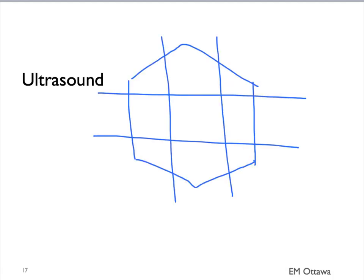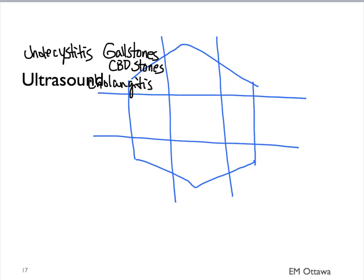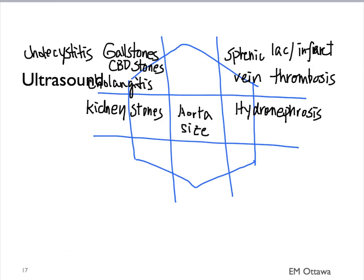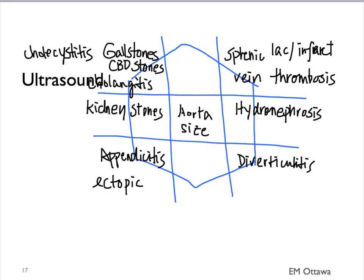When the patient goes for a formal ultrasound, more information can be gained. Formal ultrasound can diagnose gallstones, CBD stones, cholecystitis, and cholangitis. In the left upper quadrant, it can identify splenic laceration, infarct, or thrombosis of the splenic vein. For flank pain, ultrasound can diagnose hydronephrosis and kidney stones, and can also measure the size of the abdominal aorta. We use ultrasound to diagnose appendicitis, and in some patients diverticulitis can be picked up. For non-GI causes of lower abdominal pain, ultrasound can rule out ectopic pregnancy, ovarian torsion, and tubo-ovarian abscess in females, and testicular torsion and epididymitis in males.